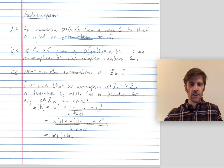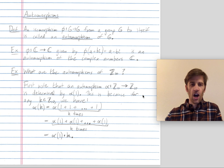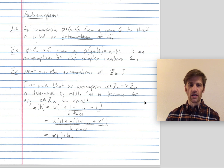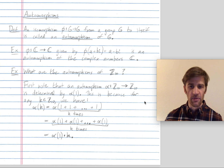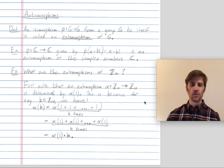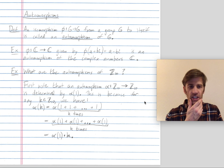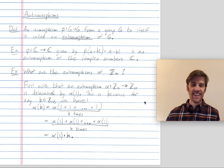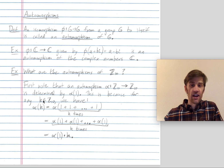Let's say alpha is an automorphism from Z mod 10 to itself. One key comment is that the entire map alpha is determined by alpha(1). So if I tell you where alpha maps 1, then you know where alpha maps any other element. This is because 1 is a generator. So let's say I tell you where alpha maps 1 — well, where does alpha map an arbitrary element k of Z mod 10?